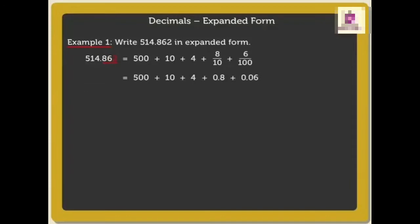Or 8 upon 10 can be written as 0.8, 6 upon 100 in decimal form 0.06, and 2 upon 1000 in decimal form 0.002. So, these are the two ways to write expanded form of decimal numbers.